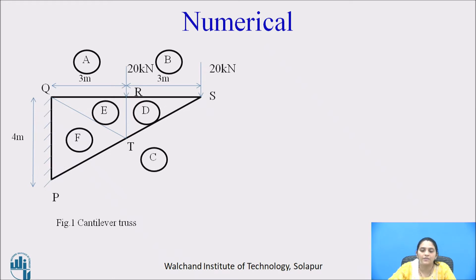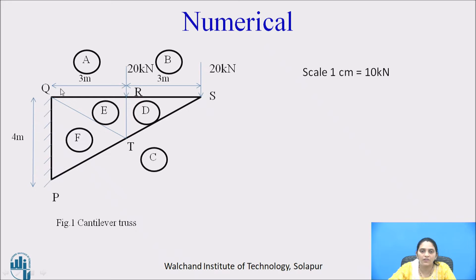Now draw the vector diagram. Take a suitable scale — for explanation purposes, I am taking a simple scale where one centimeter represents 10 kilonewtons. We will move in the clockwise direction from space A. Between space A and space B, there is one force of 20 kilonewtons acting vertically downward, so I will draw a straight line of 2 centimeters according to the scale.